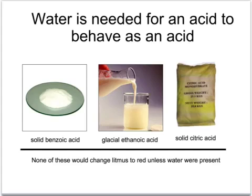So what makes an acid an acid? If we were to take some solid benzoic acid, some solid citric acid — the acid found in lemons — or some glacial ethanoic acid, in other words pure ethanoic acid as found in vinegar, none of these would change indicator paper from yellow to red or turn litmus red. It's only when water is present that they behave as an acid, so the water must be doing something to the structure of the acid.